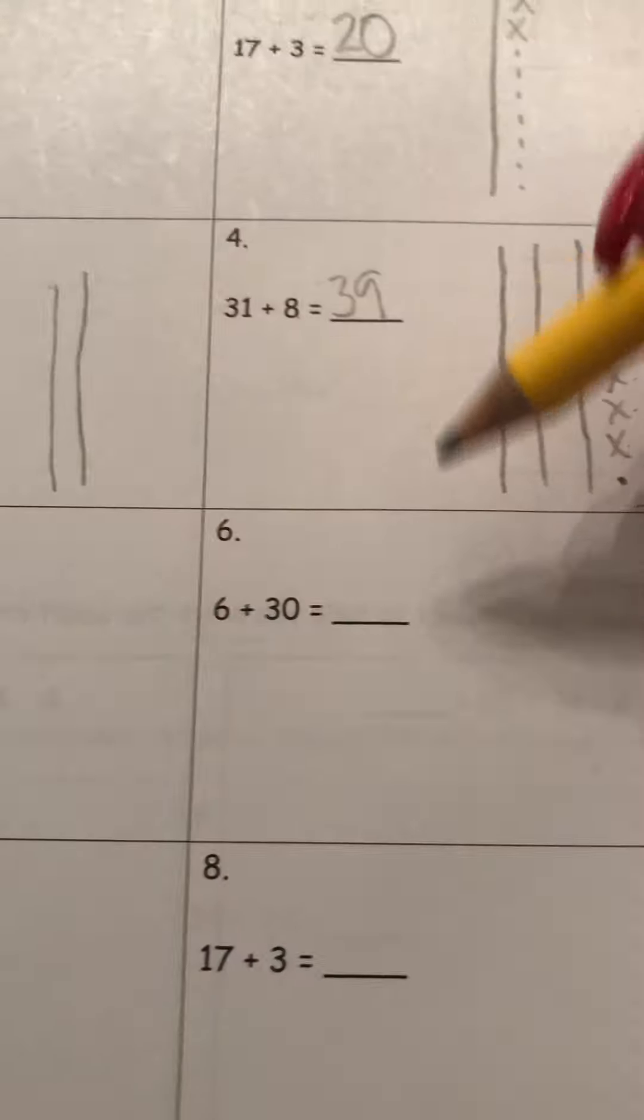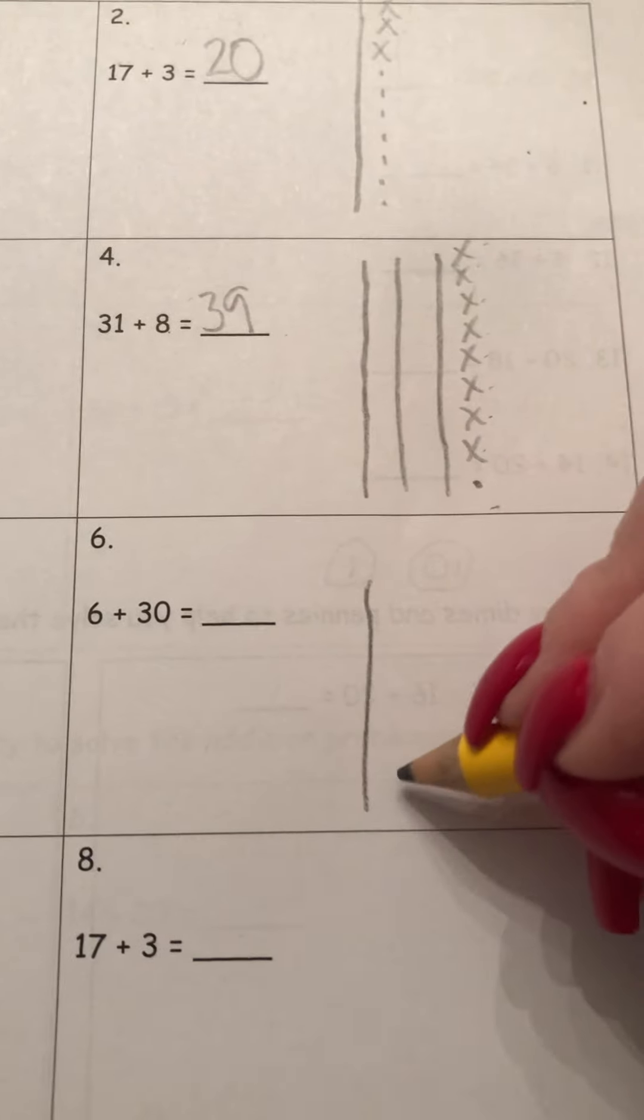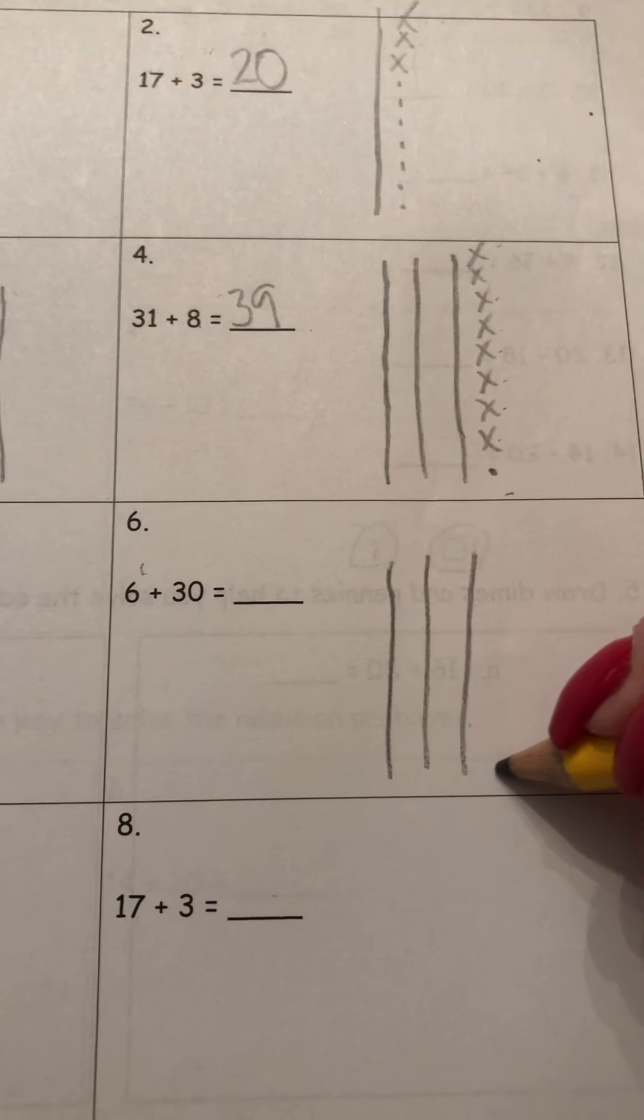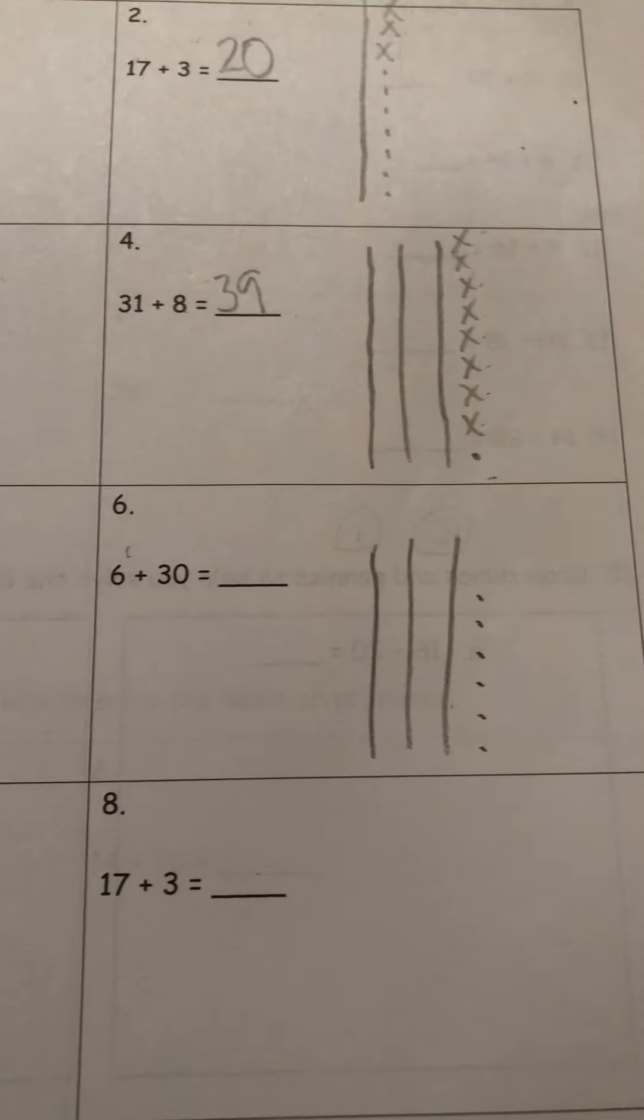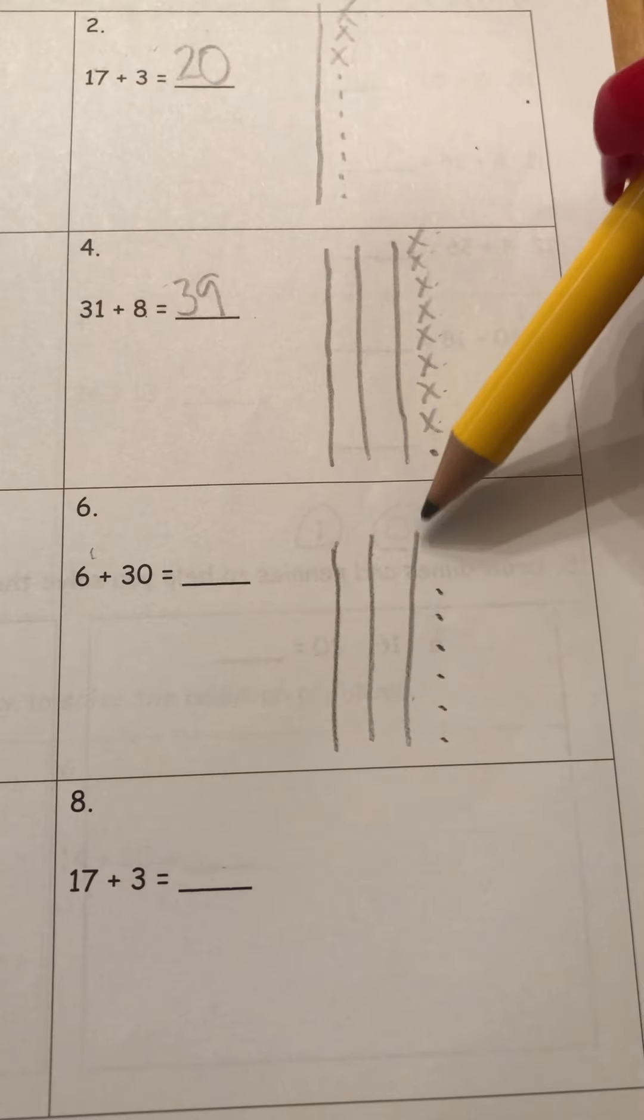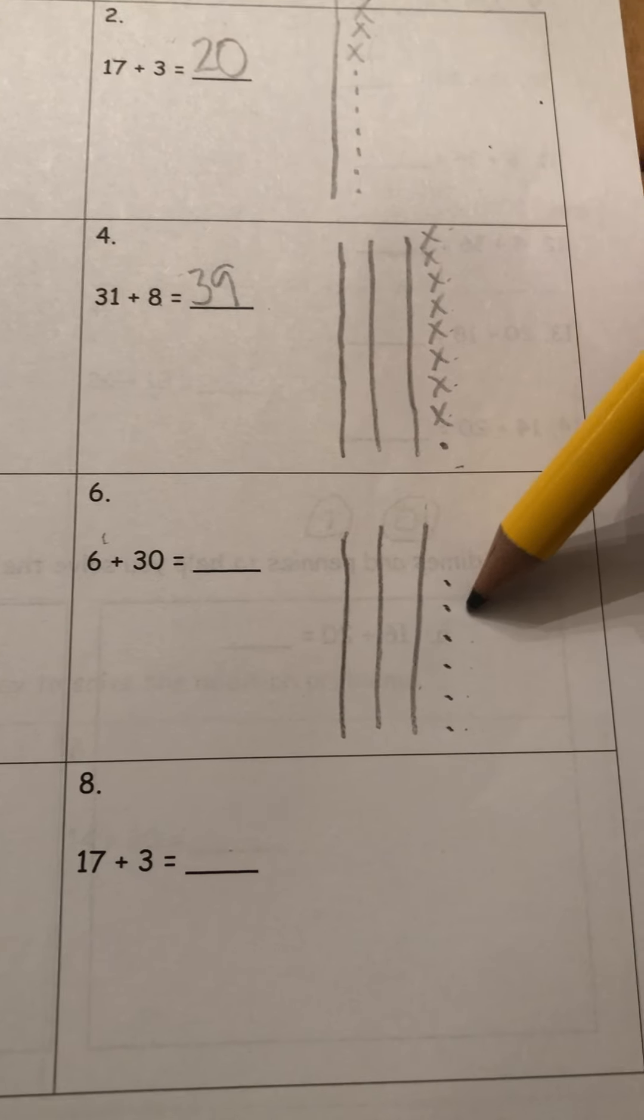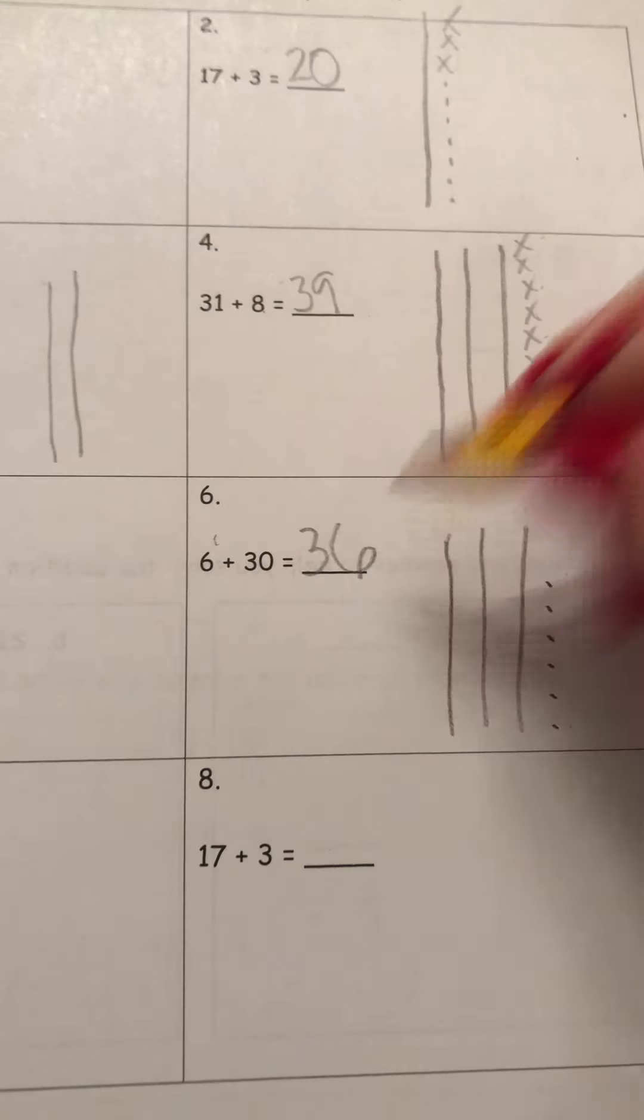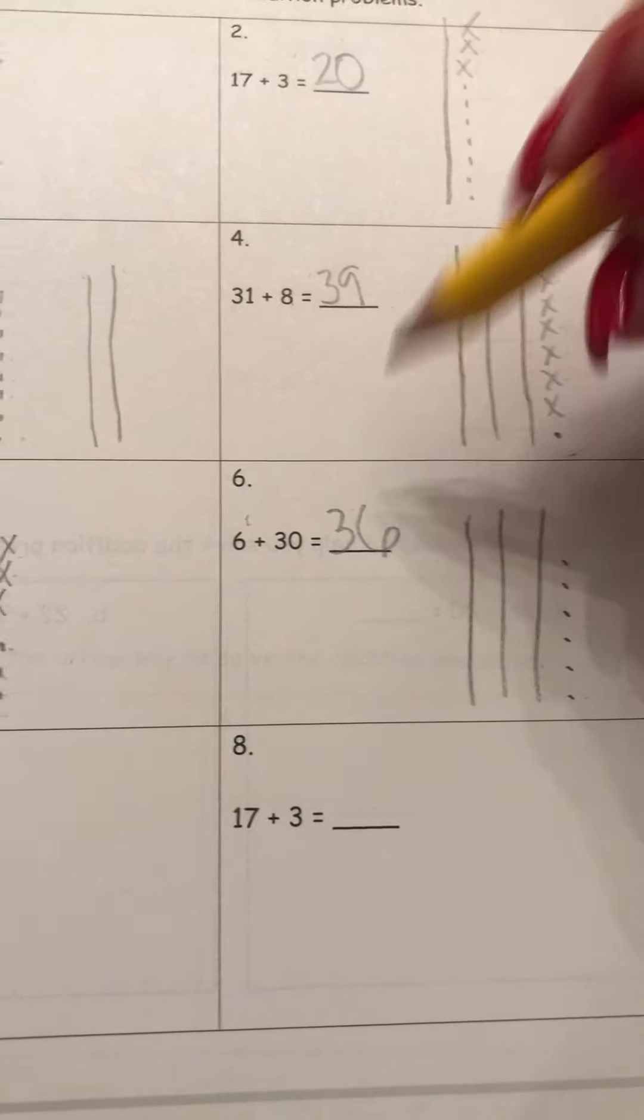6 plus 30. Let's draw our quick tens for 30 first. And it's just 10, 20, 30. And how many ones? 1, 2, 3, 4, 5, 6. So we have 10, 20, 30, 31, 32, 33, 34, 35, 36. 6 plus 30 equals 36.